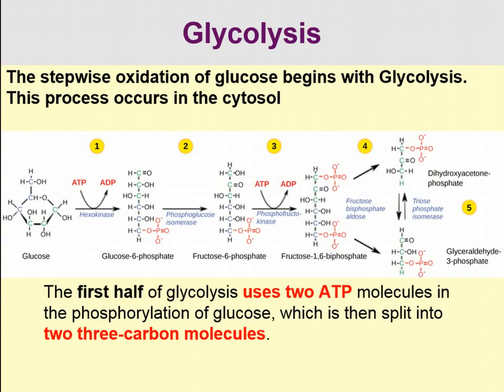The first process is glycolysis — the stepwise oxidation of glucose. Remember, oxidation is the loss of electrons. Glycolysis occurs in the cytosol of the cell. The first half uses two ATP molecules, so we're spending energy to get started. Glucose is the substrate for hexokinase, which creates glucose-6-phosphate, the substrate for phosphoglucose isomerase, and so on through a metabolic pathway that ends in the production of two 3-carbon molecules.